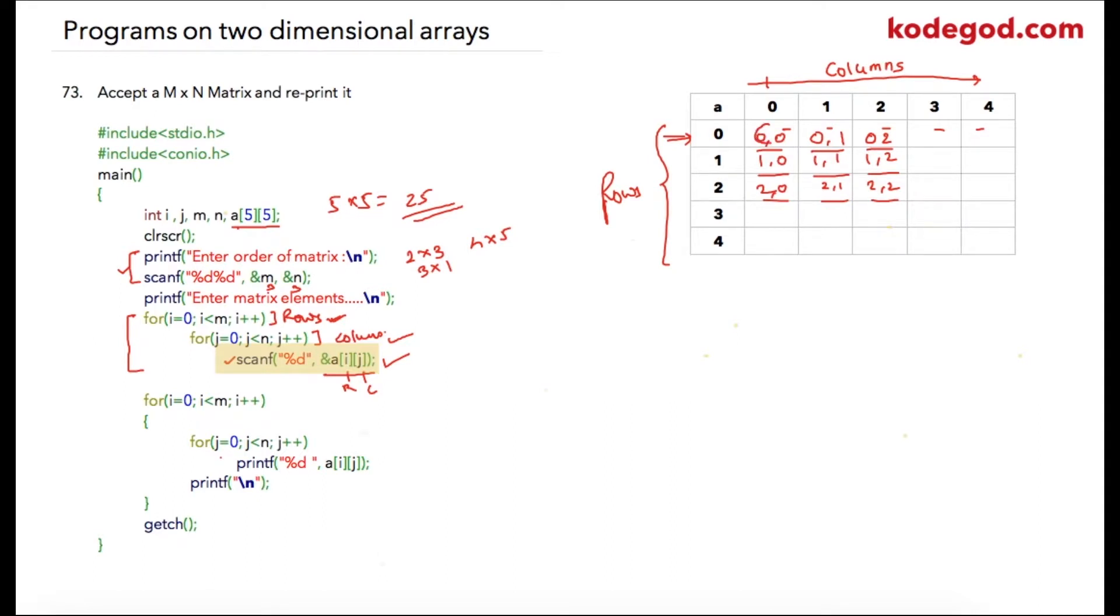So whatever user enters in the scanf statement will be stored at this location. Suppose the user has entered 10, 20, 30, 40, 50, 60, 70, 80, and 90. So this is my three by three matrix.